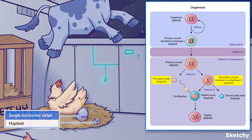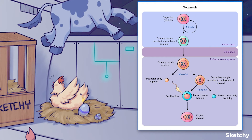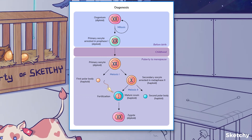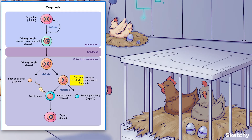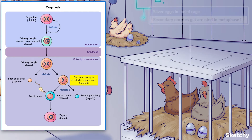These cells have just one set of chromosomes after completing one round of cell division. To put it another way, they're haploid, hence the single horizontal stripes. The secondary oocyte then enters meiosis 2, but gets arrested in metaphase 2. This is depicted by the silver eggs locked inside a metal cage — metal for metaphase 2.